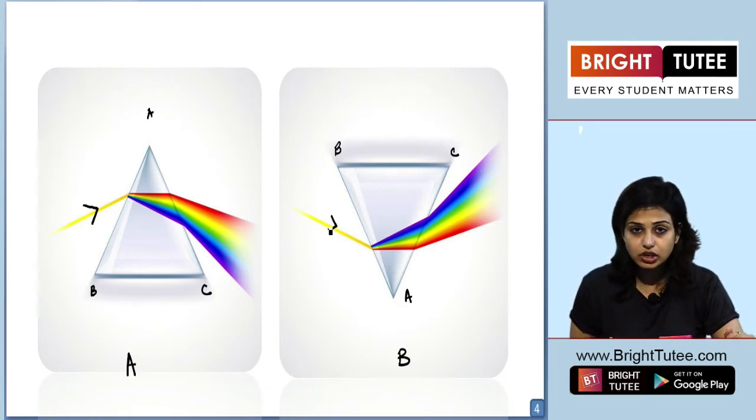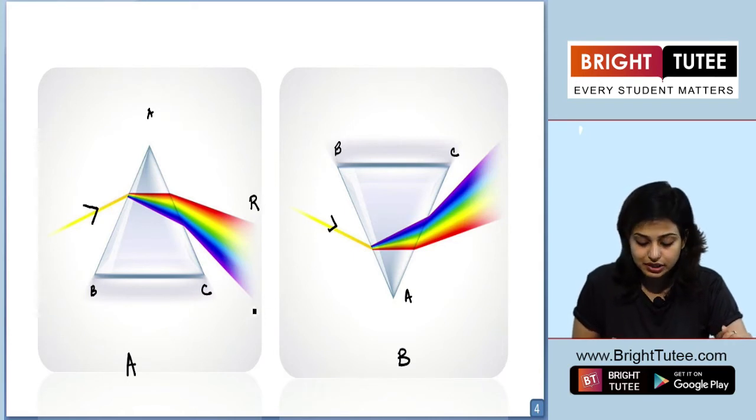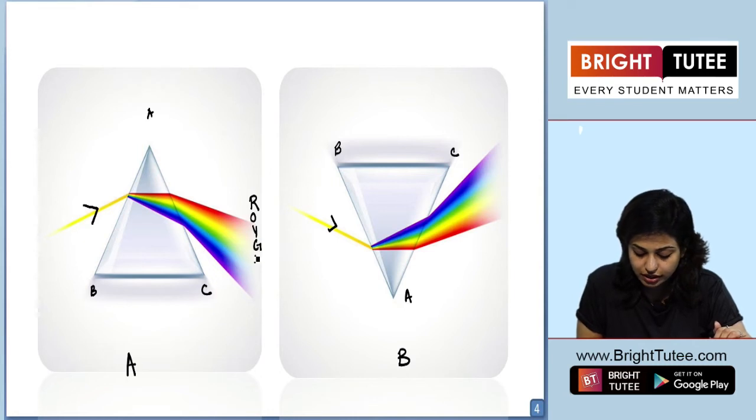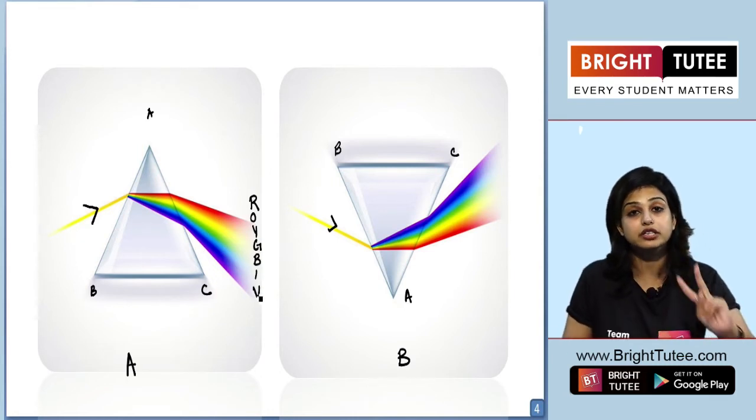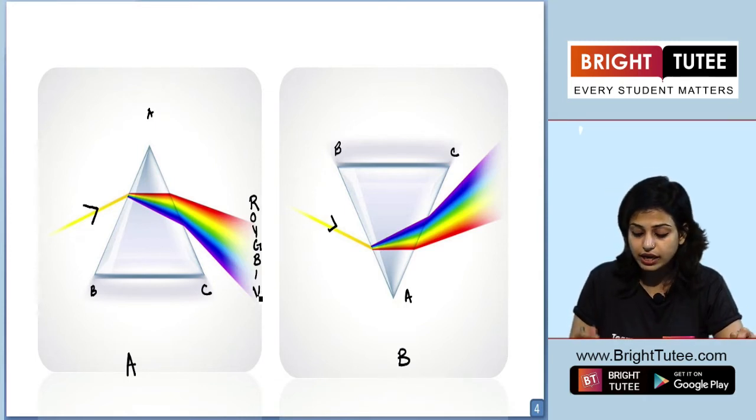In the first, you see that red is on the top. Then comes the orange, then comes the yellow, then the green, then the blue, then the indigo, and the violet. Dispersion is happening in both cases.